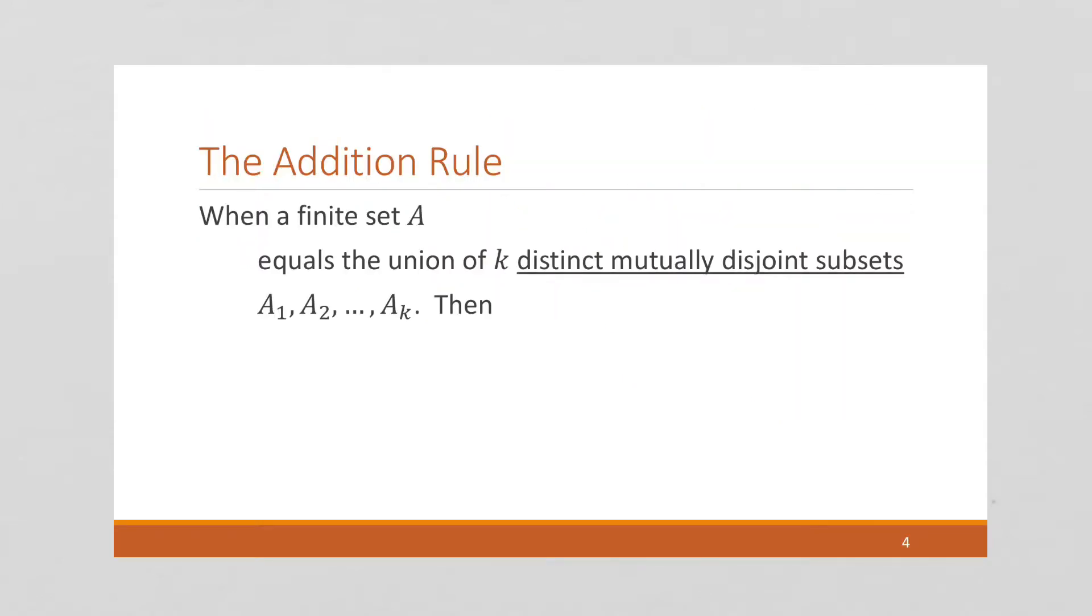Okay, so the official rule, if we have a finite set A, which is equal to the union of K distinct mutually disjoint subsets, so a way of looking at this is we have A. This is the sum total of A. Remember your set theory. And we break this into K parts. So here's A of one. There's A of two. There's A of three. A of four. Dot, dot, dot. A of K. Right, so we don't know how many K is. All right, these are distinct mutually disjoint subsets.